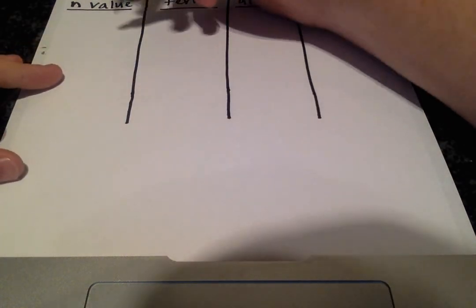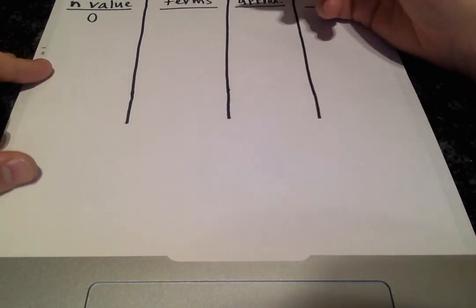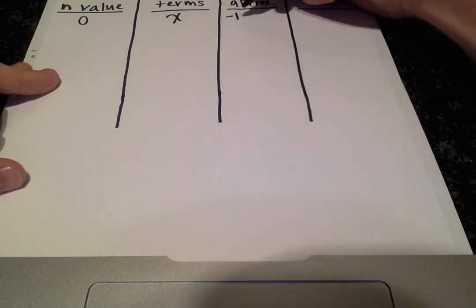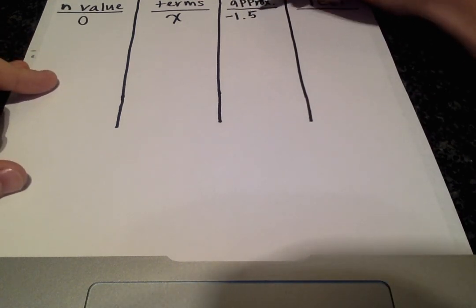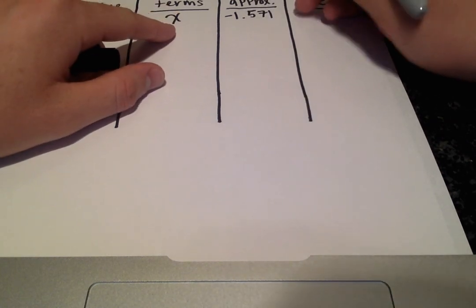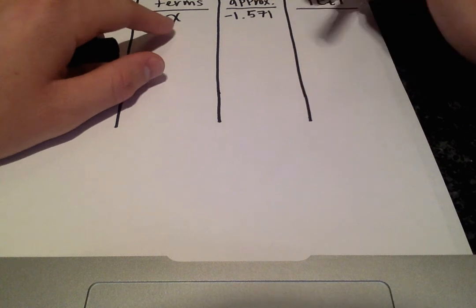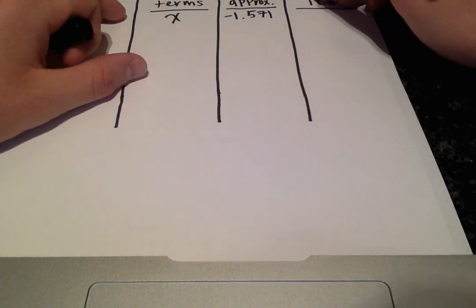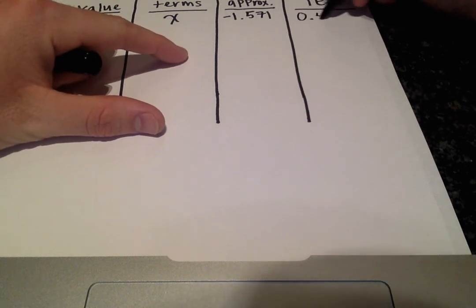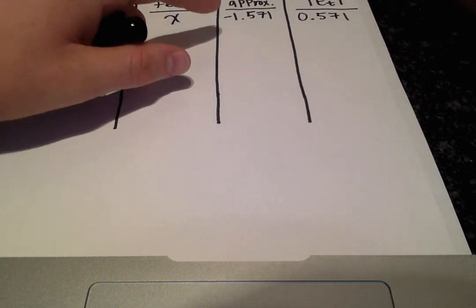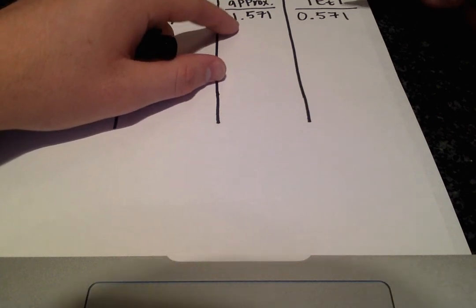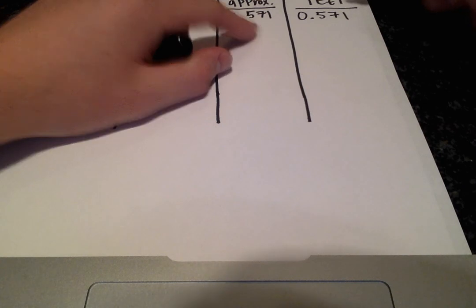Starting off, when n equals 0 the term is just x, and plugging in negative pi over 2 gives an approximation of negative 1.571. Our absolute true error is 0.571, since negative 1 minus negative 1.571 equals 0.571.